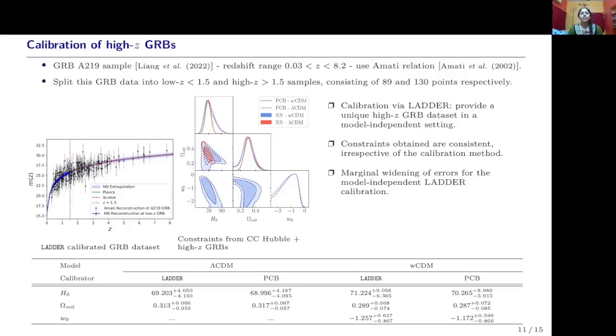Finally, we have worked on the calibration of high redshift observations from gamma ray bursts in a model independent way. For this, we shall use the GRB A219 sample which has been split into two halves: the low z and the high z samples. For the low z samples, we cross-correlate it with the LADDER reconstruction and make use of the Amati relation to obtain the GRB calibration parameters. With these, we can now extrapolate this dataset to higher redshifts and have a unique model independent GRB dataset. To compare the LADDER calibration with the standard model-based calibration, we obtain the constraints for two different models, Lambda CDM and wCDM. We find that the constraints obtained on the model parameters are consistent irrespective of the calibration method.